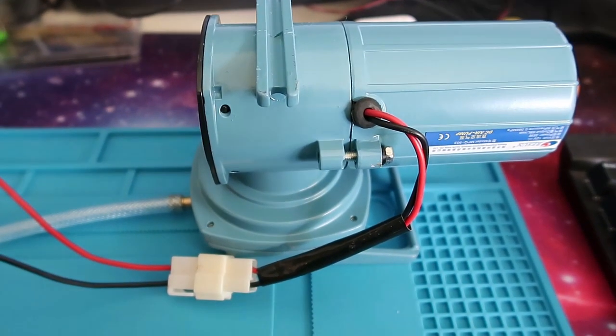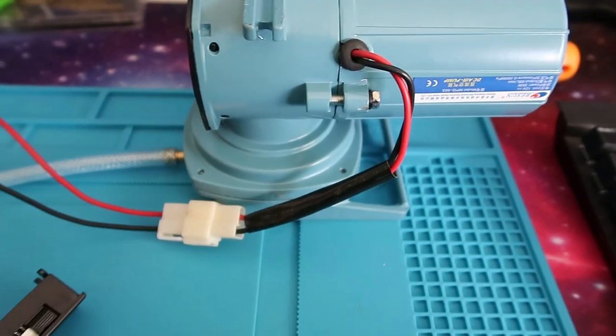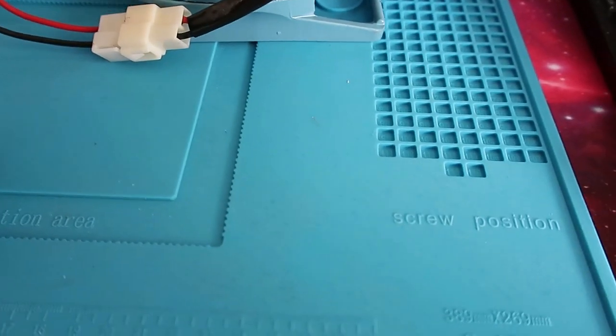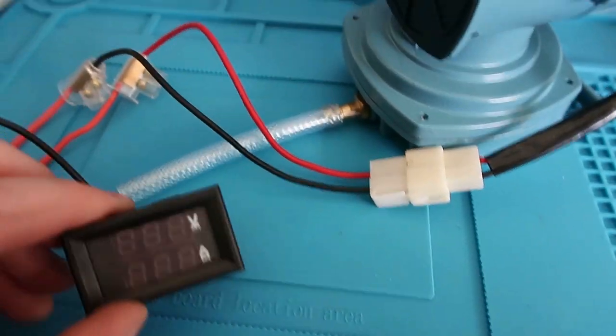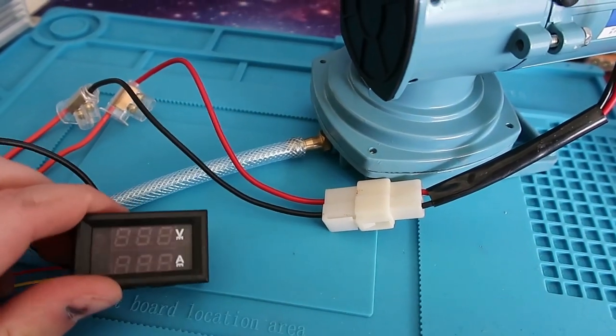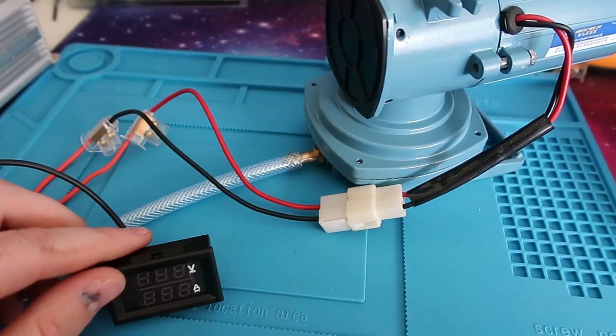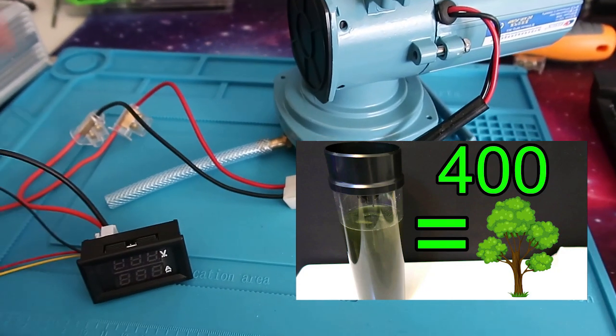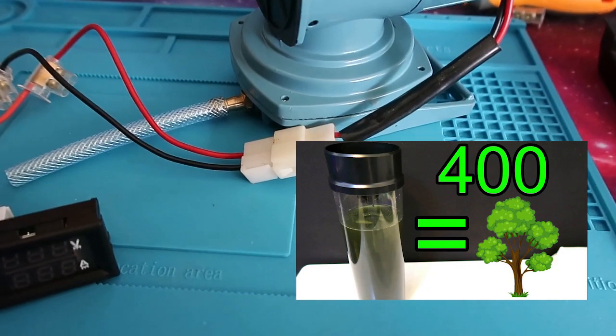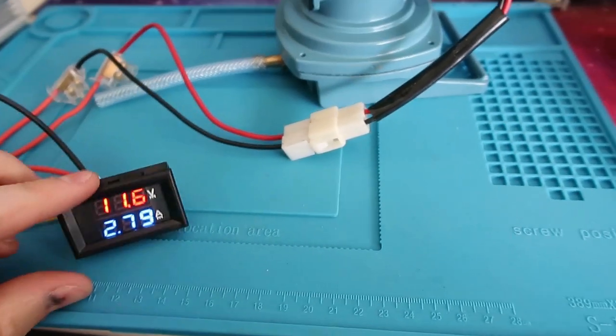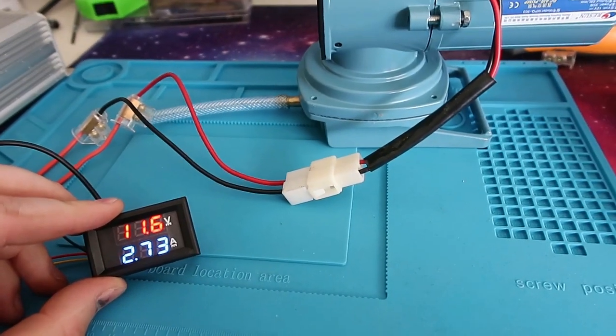Now the next one up is this bigger air pump which I'm going to connect up same way positive to the positive rail the negative down through into the meter. Now this air pump I'll be using for my CO2 project so you can go check that out as well and when we plug this pump in it makes quite a bit of noise.